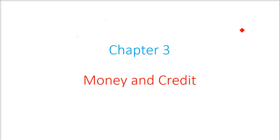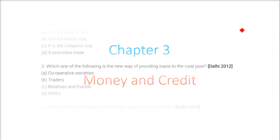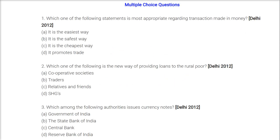We are taking Chapter 3, which is Money and Credit, and we are going to take the multiple choice questions. Which one of the following statements is most appropriate regarding transactions made in money?